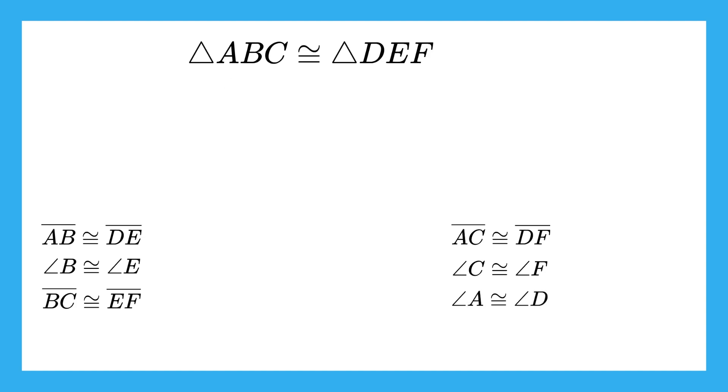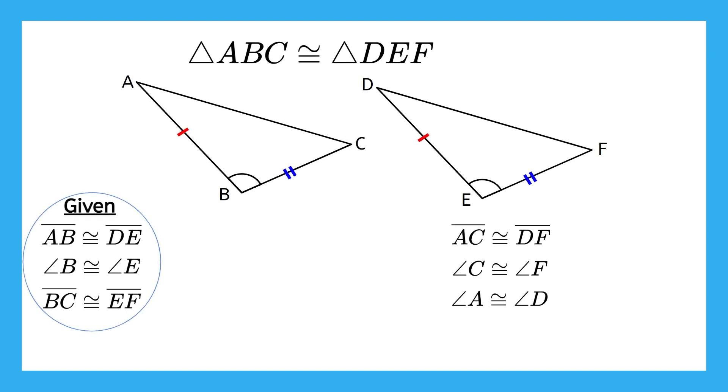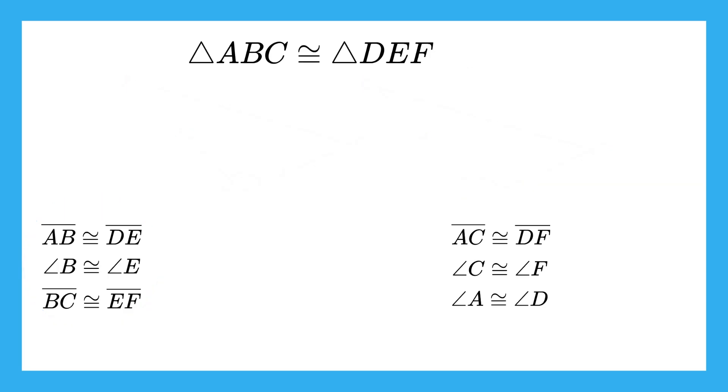We now have all possible congruence statements written. These three were given to us in the original picture. Then, we wrote a triangle congruence statement because we had side angle side triangle congruence, and from there we were allowed to use CPCTC, which is the fact that corresponding parts of congruence triangles are congruent to make three more congruence statements. This way of taking things one step at a time will be very important in your upcoming proofs unit.